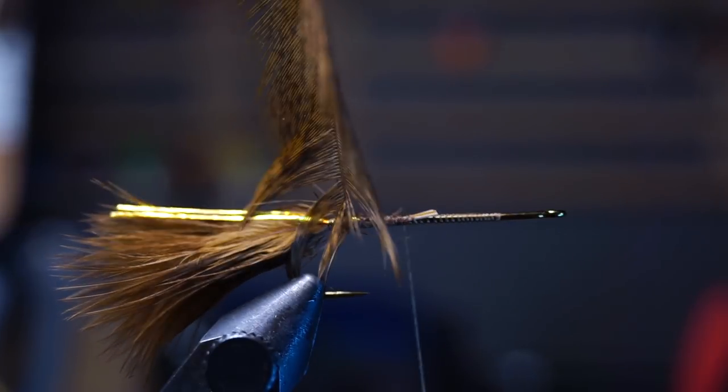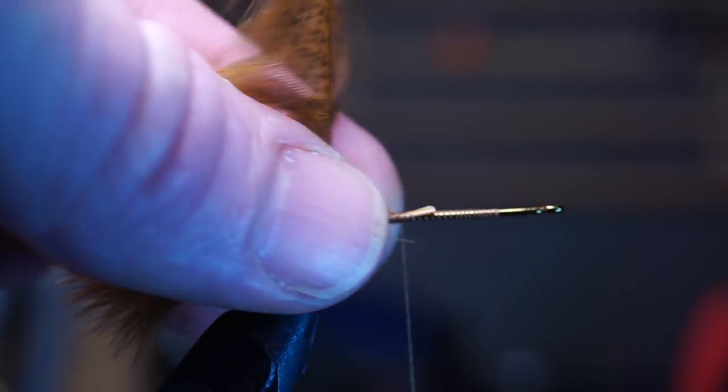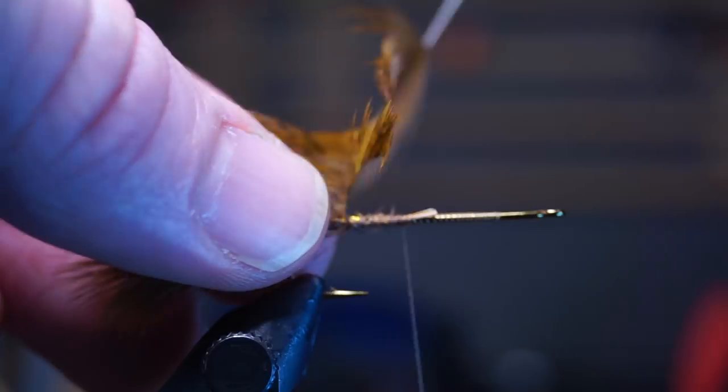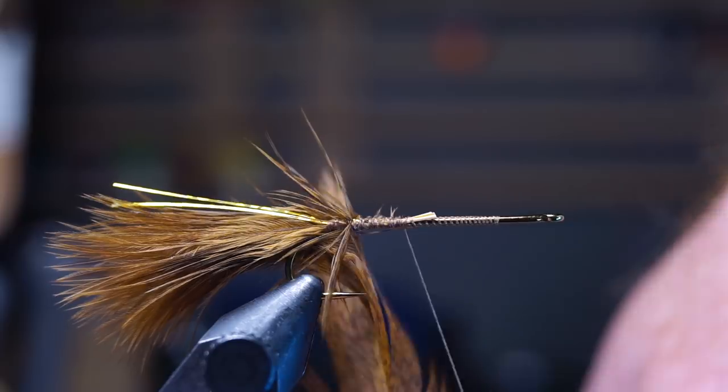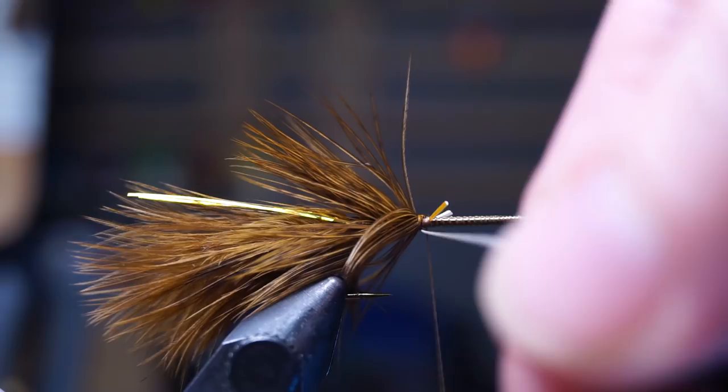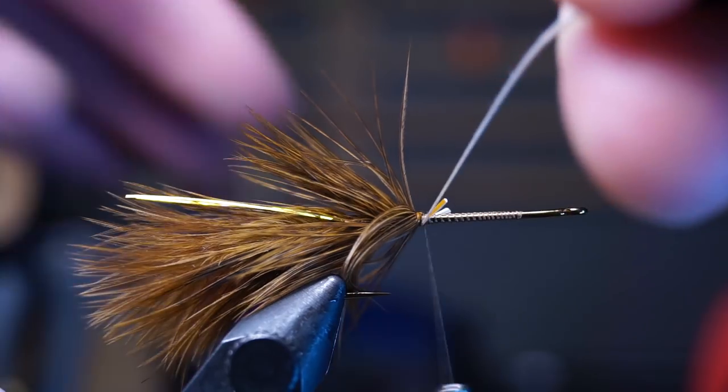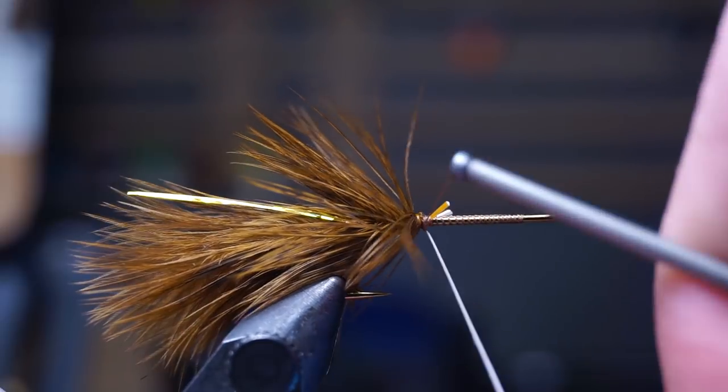Also when wrapping the feather, make sure you pull all the fibers rearward with each wrap. But if you miss one or two here and there, no big deal. Just do your best. Once you reach bare stem, capture that stem tightly and trim off the waste.